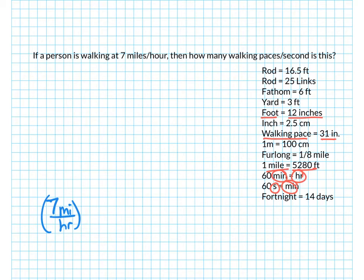And I'm going to convert miles over into walking paces first. So miles to feet, that means miles on the bottom and the next. So miles, 5,280 feet. And then in a foot, there are 12 inches. And then I can go from inches to walking paces. So 31 inches, I'm just going to call it a pace.